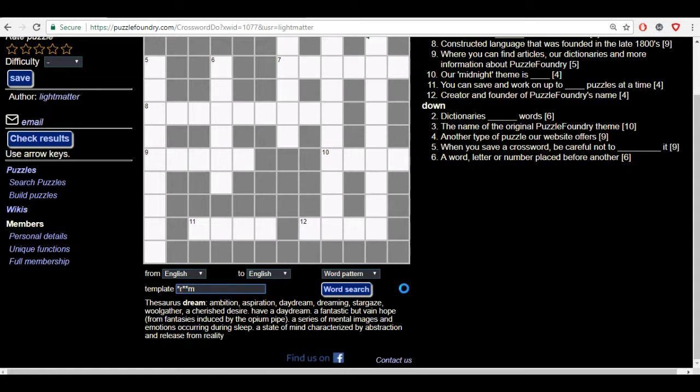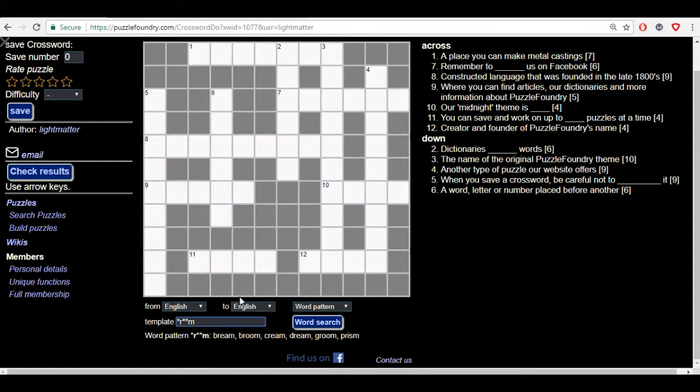If you press enter for the word search, it gives you some examples where the wild cards will be filled in with letters of possibilities that actually do exist. Like we have bream here, broom, cream, dream which is the one we were looking for, groom and prism. So that's just basically how the word pattern function looks.